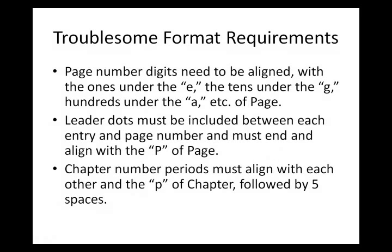Most of the formatting requirements are fairly straightforward. There are, however, a few that tend to cause trouble. The first is that the page number digits need to be aligned with the ones under the E, the tens under the G, hundreds under the A, et cetera, of page. Another is that leader dots must be included between each entry and page number and must end and align with the P of page. And lastly, chapter number periods must align with each other and the P of chapter, followed by five spaces.